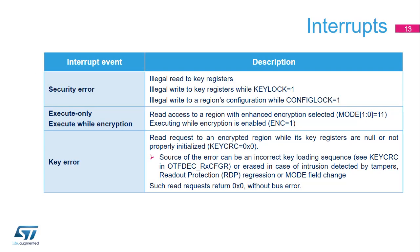The OTF-DEC has three interrupt sources. The security error is raised when an attempt to read key registers is detected, when an attempt to write keys while the key lock bit is set, or when an attempt to reconfigure a region while the config lock bit is set. When enhanced encryption is selected (mode equals 1-1), the execute-only error is raised when a read access to an execute-only region is attempted. When encryption mode is selected (ENC equals 1), the execute-while-encryption error is raised when code is fetched to any protected region. The key error is raised when a read request is attempted to a region whose key registers are null or not properly programmed (key CRC equals 0), which can occur due to incorrect key register writing sequence, intrusion detected by tampers, readout protection regression, or mode field change.